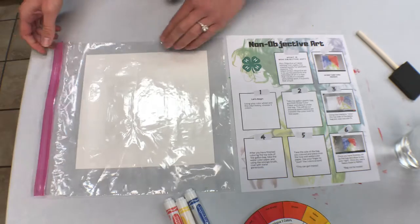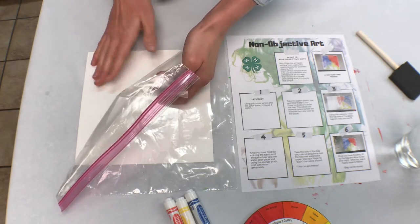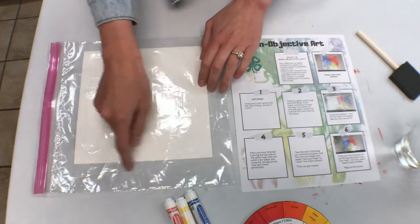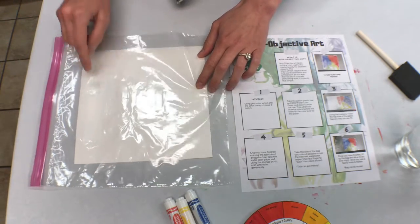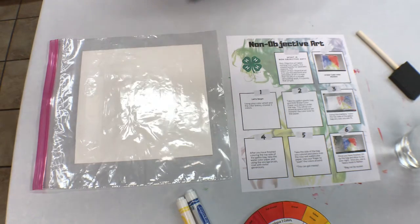And then you're going to place your watercolor paper under your gallon-sized Ziploc baggie. That way you see how much space you need to color on the gallon bag. And then you're just going to start coloring.